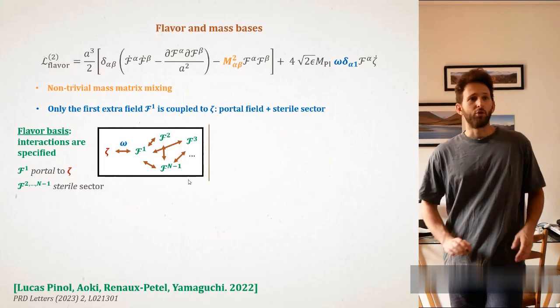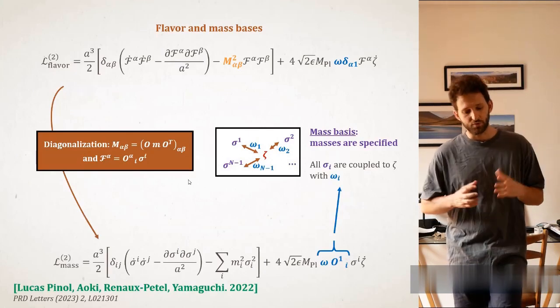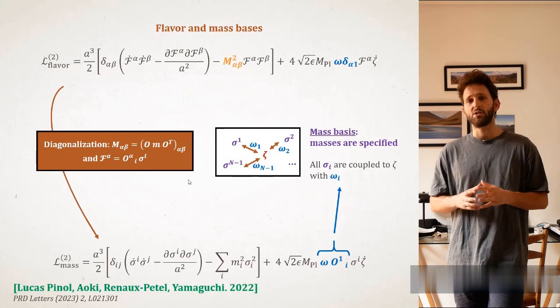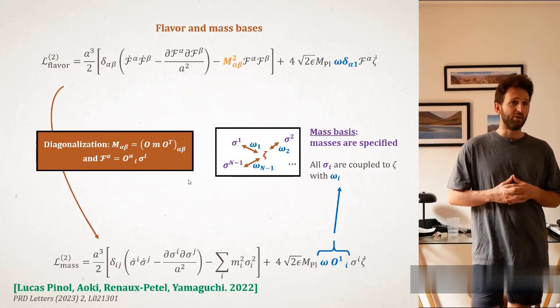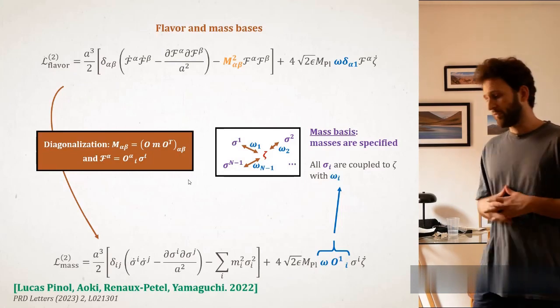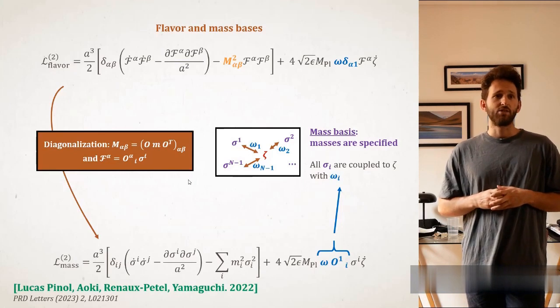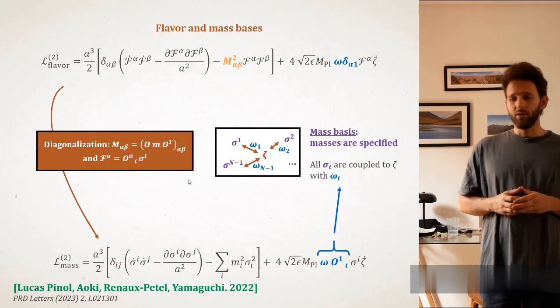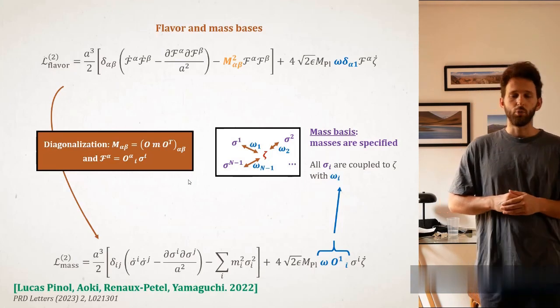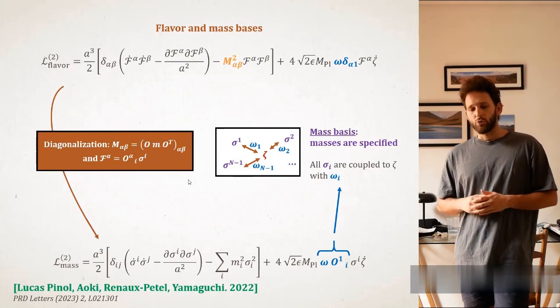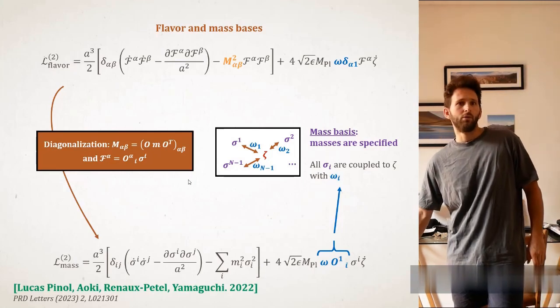So, of course, you could adopt another route, and you could diagonalize your mass matrix M_αβ, if it is sufficiently well-behaved, and define the mass eigenstates of the inflationary theory, that I will denote as σ_i in this talk. There is a matrix of change of basis, O, that enables to go from the flavor eigenstate basis to the mass eigenstate. And in this basis, the σ_i are all coupled to zeta via a coupling ω_i, that depends on the initial bilinear coupling ω, and the rotation matrix to go from the flavor basis to the mass basis.